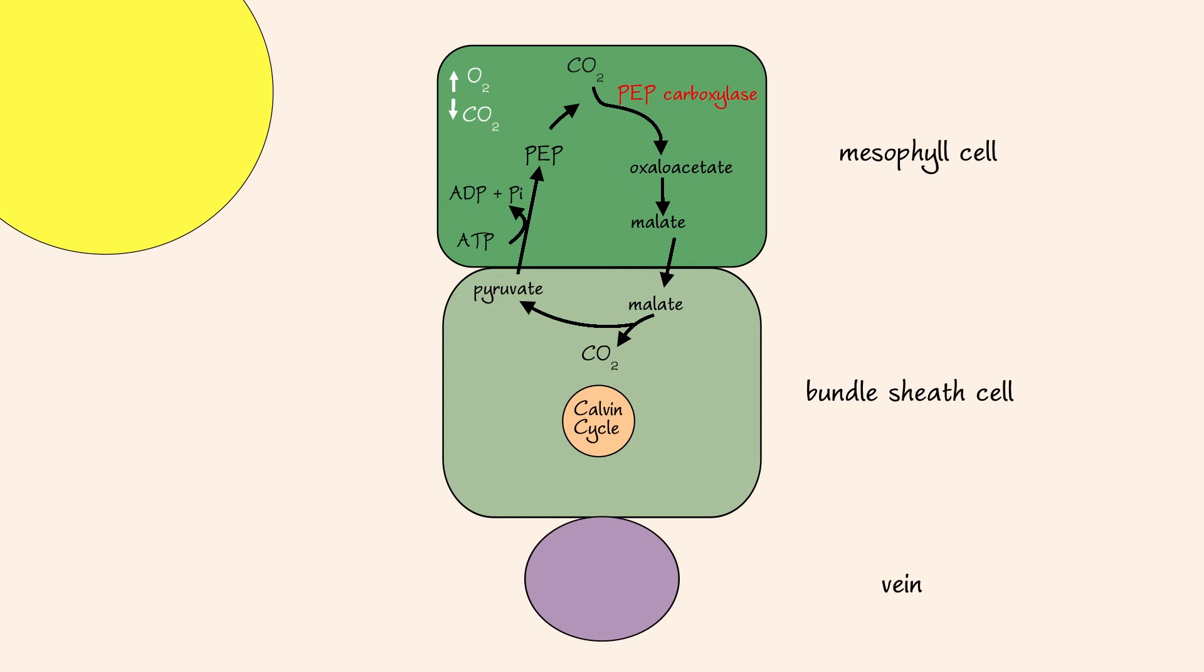The Calvin cycle occurs in the bundle sheath cell of C4 plants. Because carbon dioxide is highly concentrated in this cell, Rubisco will assimilate carbon dioxide. Glyceraldehyde-3-phosphate is produced from the Calvin cycle. The rearrangement of cells in the mesophyll layer allows for the concentration of carbon dioxide. This ultimately results in the reduction of photorespiration.